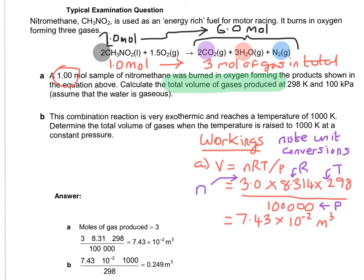Then it says the combination reaction is very exothermic and reaches a temperature of 1000 Kelvin. Determine the total volume of gases when the temperature is raised to 1000 K at a constant pressure. This time we want the same answer but at a higher temperature. We've got to scale 298 up to 1000.